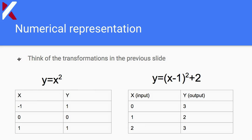Let's look at a numerical representation. The parent function y = x² — if you plug in negative one, you square it and get 1. Plug in zero, get zero. Plug in one, get one. Now with the transformation y = (x − 1)² + 2, plugging in zero: you get (0 − 1)² = 1, plus 2 equals 3. Plugging in one: (1 − 1)² = 0, plus 2 equals 2. Plugging in two: (2 − 1)² = 1, plus 2 equals 3.